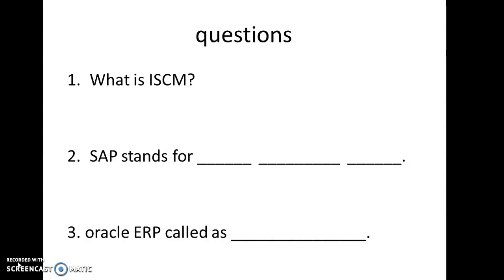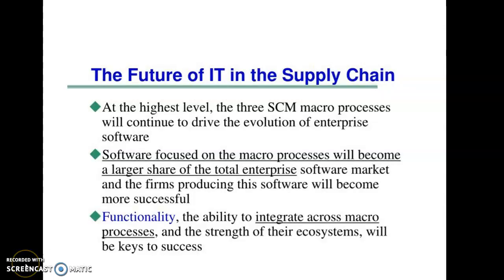The third question: Oracle ERP is called Oracle E-Business Suite. Now, the future of IT in the supply chain. We have already discussed the IT framework in the supply chain, and it consists of three macro processes: CRM, ISEM, and SRM.